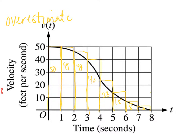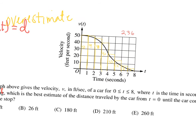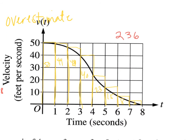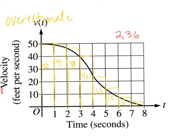And if I add all of those areas together — if I add all those up with my calculator — I get 236. So that is an overestimate, and you could say that the answer then is D. If you wanted to try just one more just to confirm, I would do a base of 2, and I'll do that one in green.